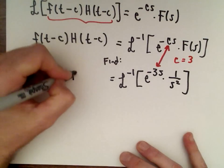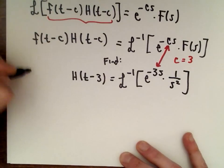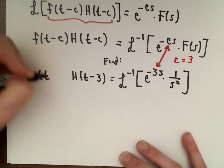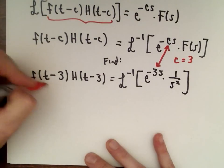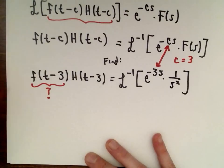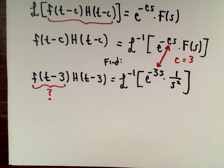I can already write we've got H(t-3). And then we're going to have f(t-3), and this is the part that we still have to figure out. Once we can figure out f(t-3), we're done. That's the last thing we have to do.